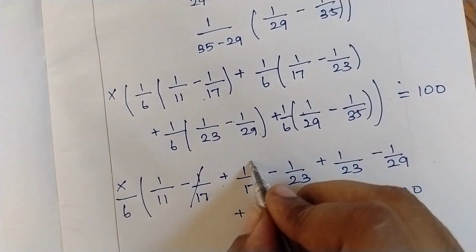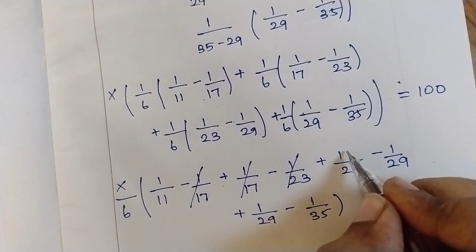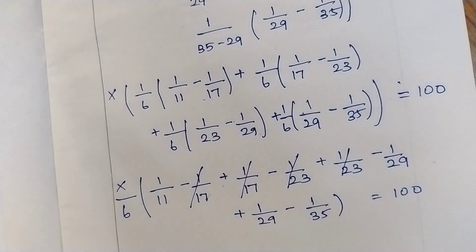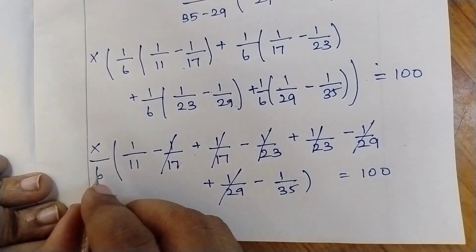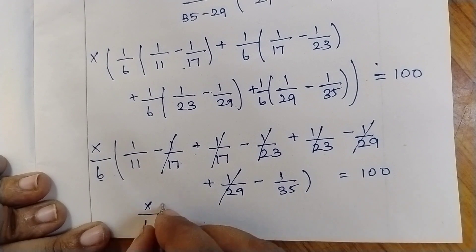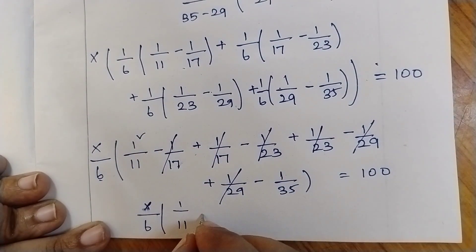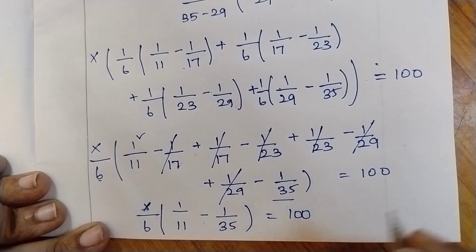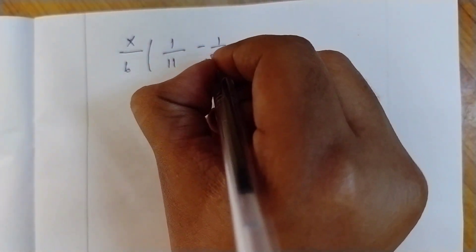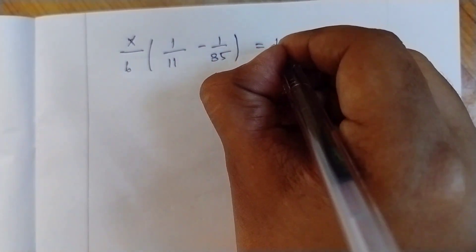Now the telescoping cancellations occur: +1/17 and −1/17 cancel, +1/23 and −1/23 cancel, +1/29 and −1/29 cancel. Therefore what we have is x/6 × (1/11 − 1/35) = 100. This is what we have at last.